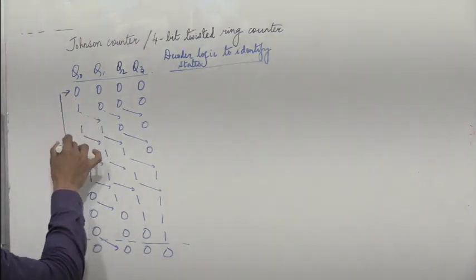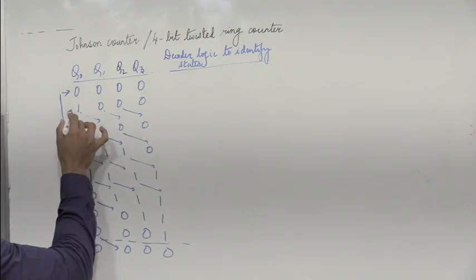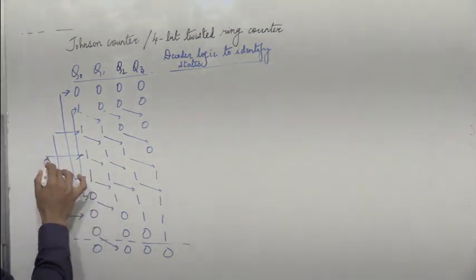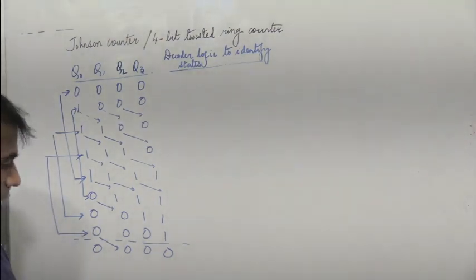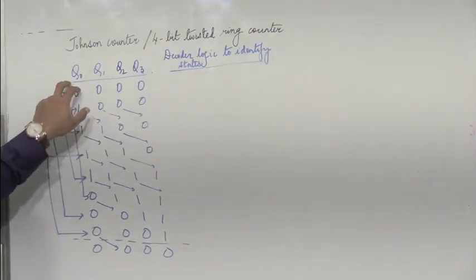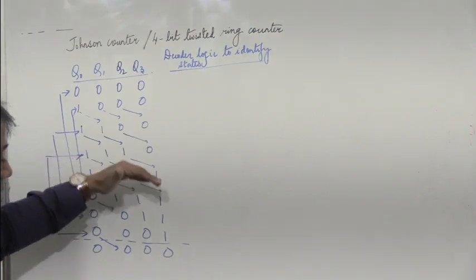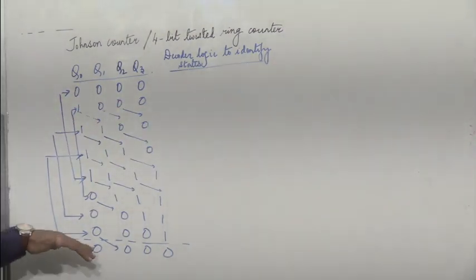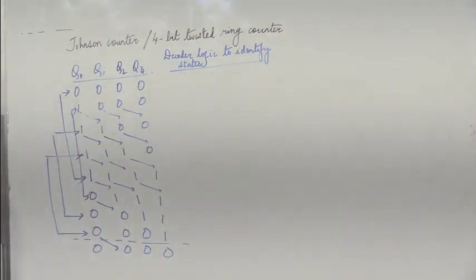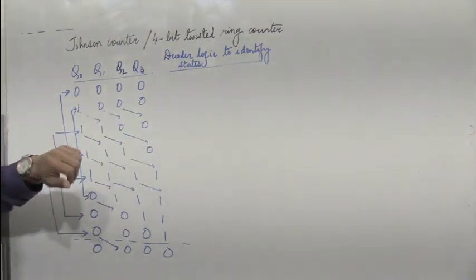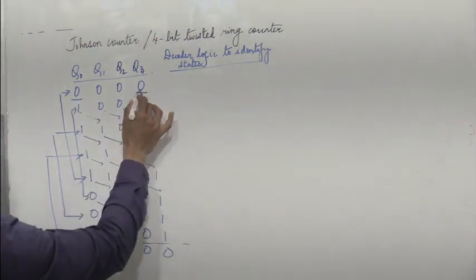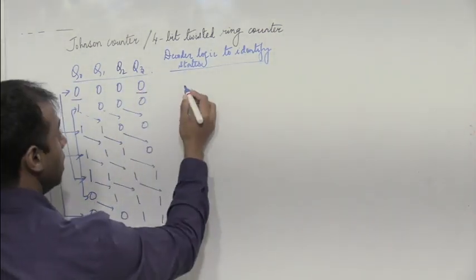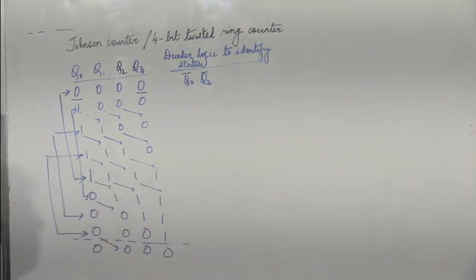We find that these two halves of states are complementary. Now how do we define states which are unique to each of them? The logic to identify states which remain unique — for the first state where all outputs are 0, there are 8 states total. For the first state where all are 0, q0 and q3 are both 0. For no other state will q0 and q3 both equal 0. So therefore q0 bar and q3 bar uniquely defines this state.